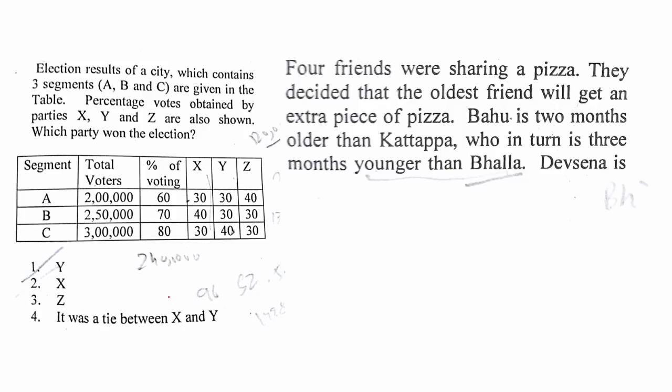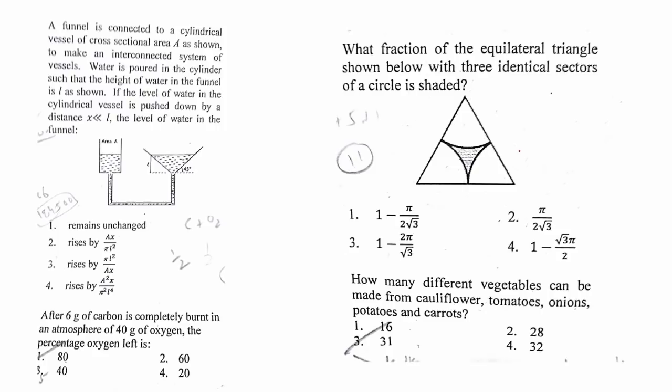For this election results question, the answer was Y. For this question, four friends were sharing a pizza—the answer is Bhalla. This question, unfortunately, is the only question which I could not figure out how to do.